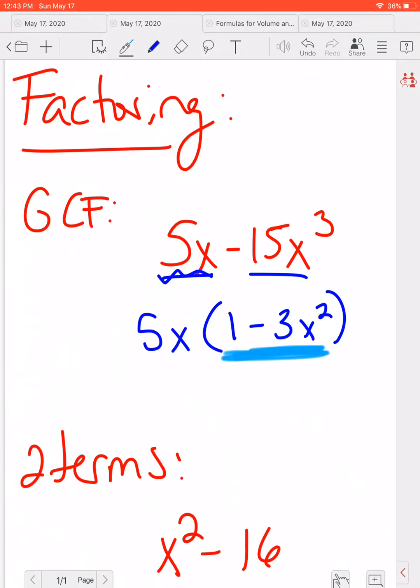We should always look after we do the greatest common factor to make sure that we cannot factor that any farther and in this case we can't because we have two terms with subtraction but this is not a perfect square.